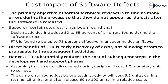The primary objective of the Formal Technical Review is to find as many errors as possible during the software process so they do not appear as defects after release. Studies of software engineering projects have found that 50 to 65 percent of all errors are introduced during the design activity — a very large percentage — due to misunderstandings, miscommunication, or mistakes.